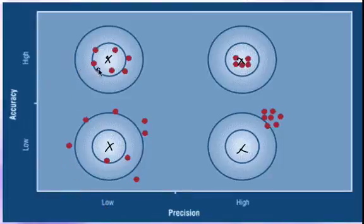You would have high accuracy here because they're all centered around where it's supposed to be. But your precision is low because they're still not really close to each other. They're all around the place.